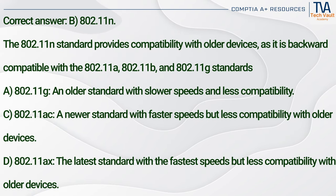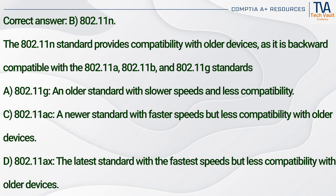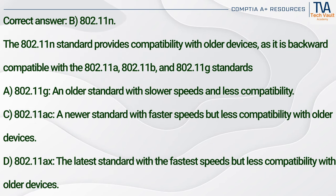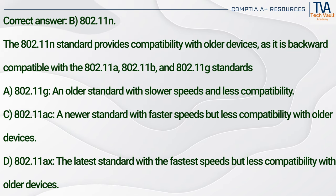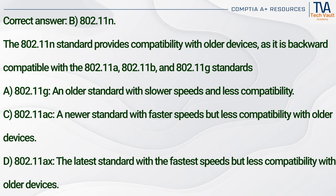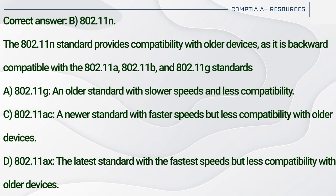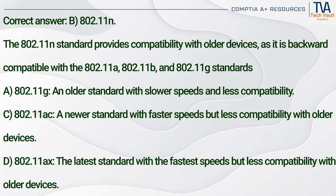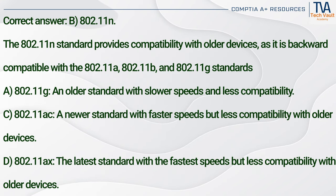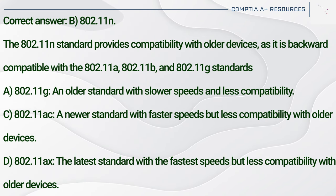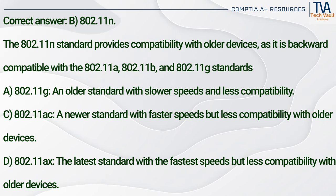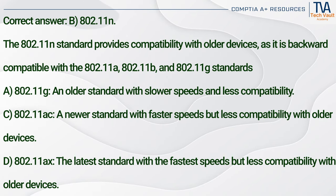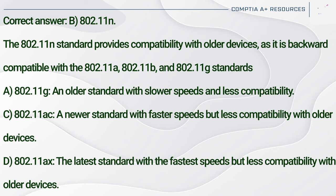Correct answer: B. 802.11n. The 802.11n standard provides compatibility with older devices as it is backward compatible with the 802.11a, 802.11b, and 802.11g standards. 802.11g (A) is an older standard with slower speeds and less compatibility. 802.11ac (C) is a newer standard with faster speeds but less compatibility with older devices. 802.11ax (D) is the latest standard with the fastest speeds but less compatibility with older devices.